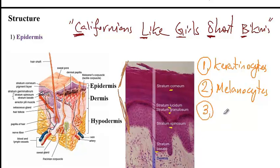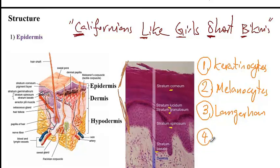The stratum basale also contains Langerhans or dendritic cells, which are the epidermis macrophages that help ingest pathogens and foreign material. Finally, Merkel cells are attached to sensory neurons to enhance our sensations of touch.